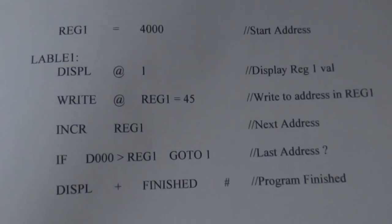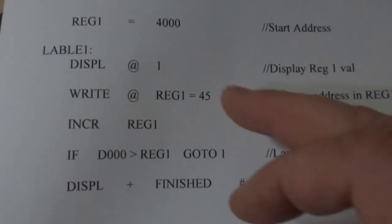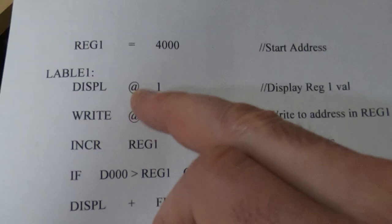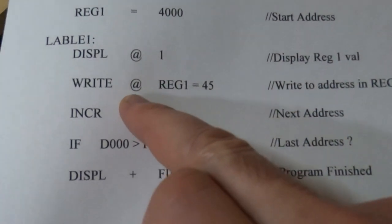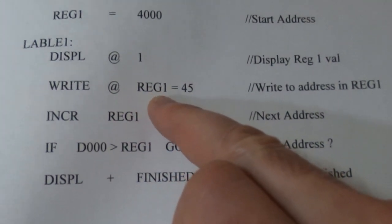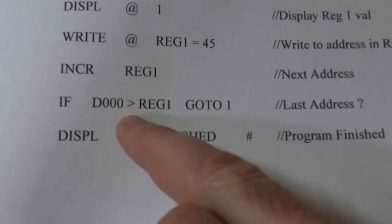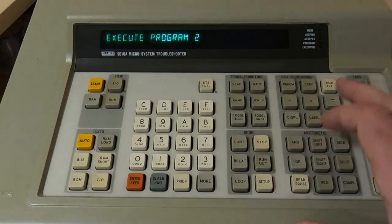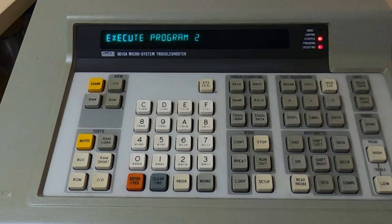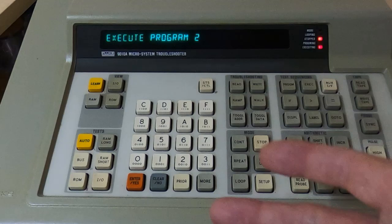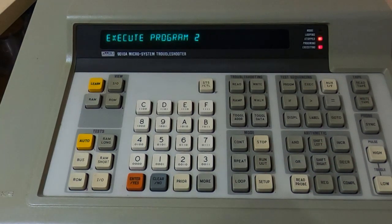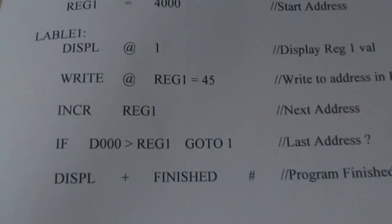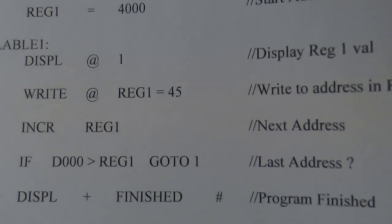This next program is a bit more complicated but still fairly straightforward. We're going to initialize register one to a value of 4000 hex, display that value on the Fluke display, write a value of 45 at the address stored in register one, increment register one, and then keep doing that until register one gets to the last address we want to write to. Note that on the Fluke's programming keys, you've only got a greater than sign - there isn't a less than sign. But you can do less than just by reversing your two parameters: if A is greater than B, reverse it to say B is greater than A. I'll enter this program and we'll have a quick look at what it does.